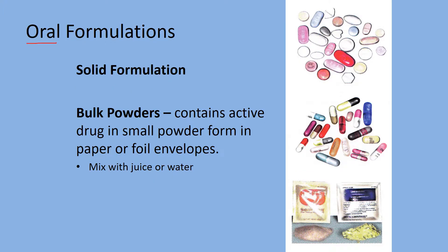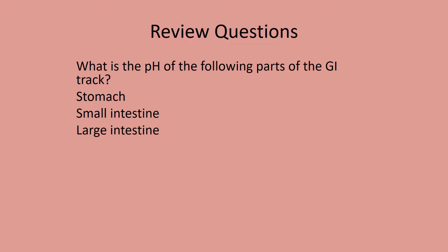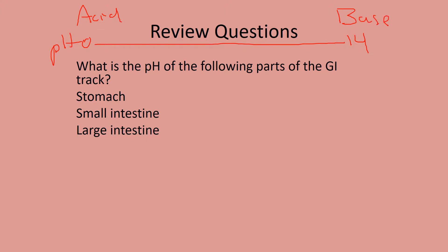For oral formulations we also have bulk powders — things like Metamucil fiber or electrolyte replacement — which you mix with juice or water before administering. Review question: what is the pH of the following parts of the GI tract? The pH scale ranges from 0 to 14; low pH is acidic, high pH is basic, and 7 is neutral. The stomach is quite acidic, ranging from 1 to 2; the small intestines are getting closer to neutral; and the large intestines enter the basic range.